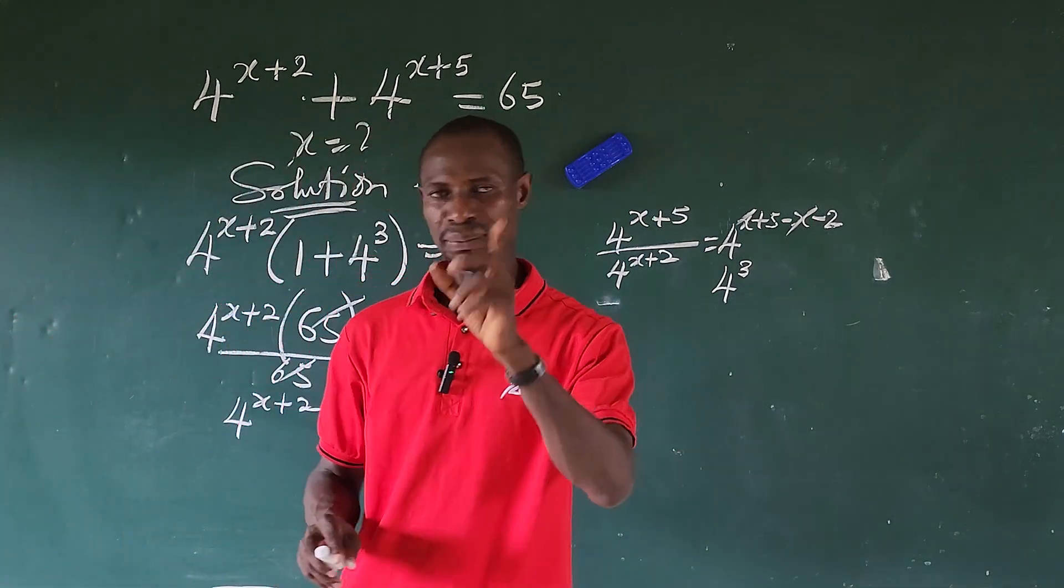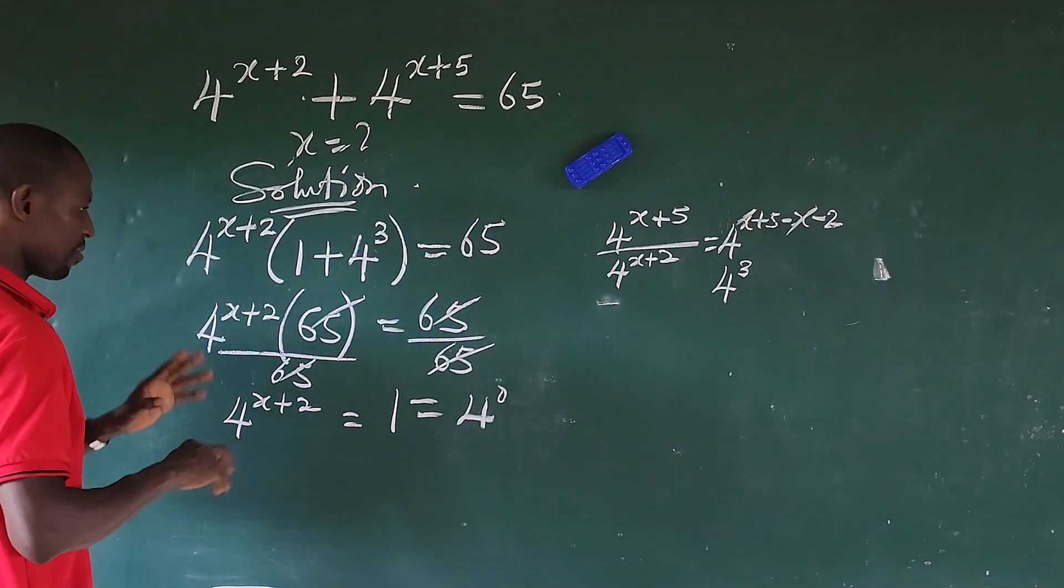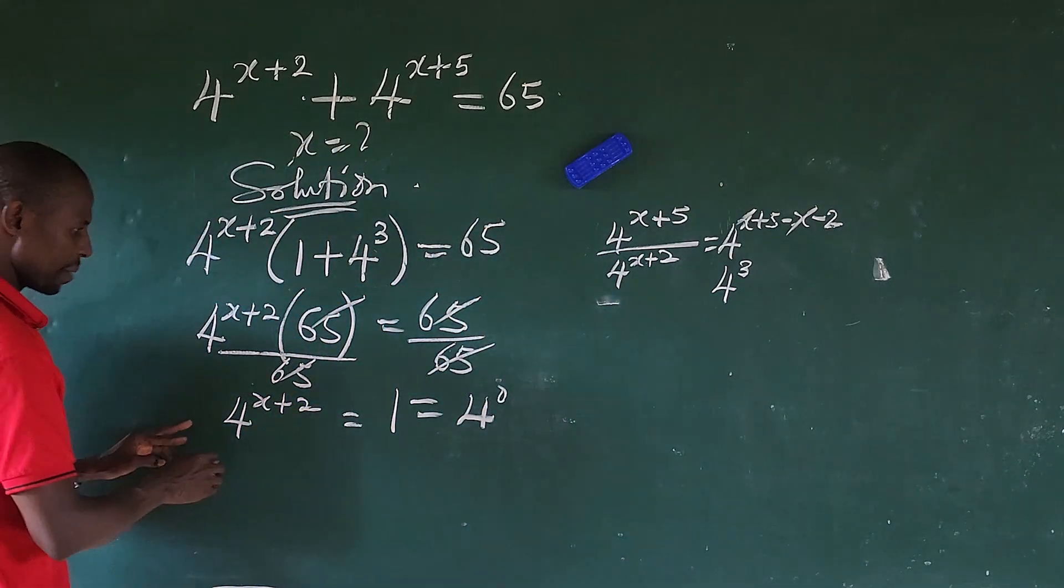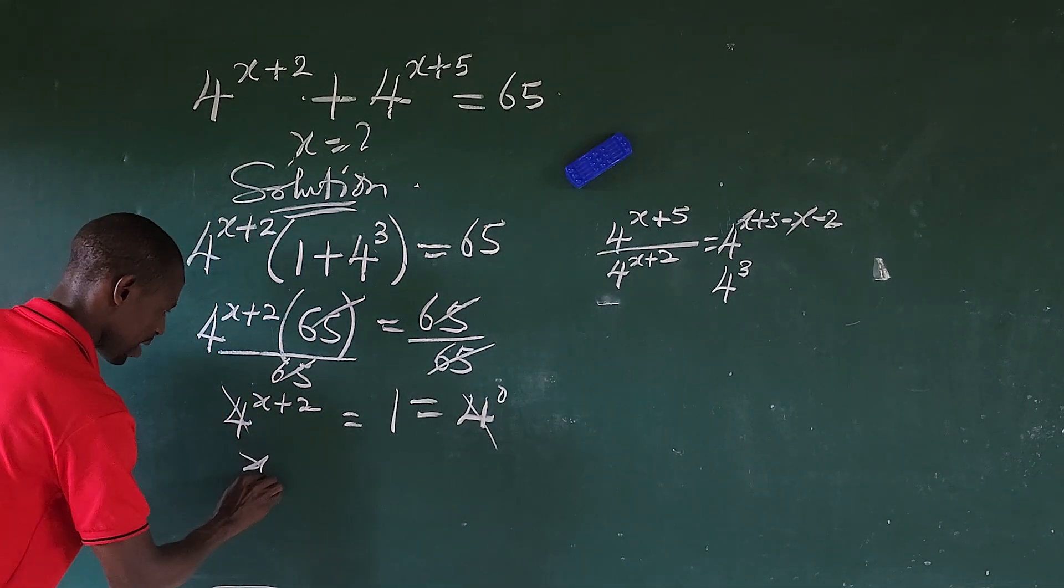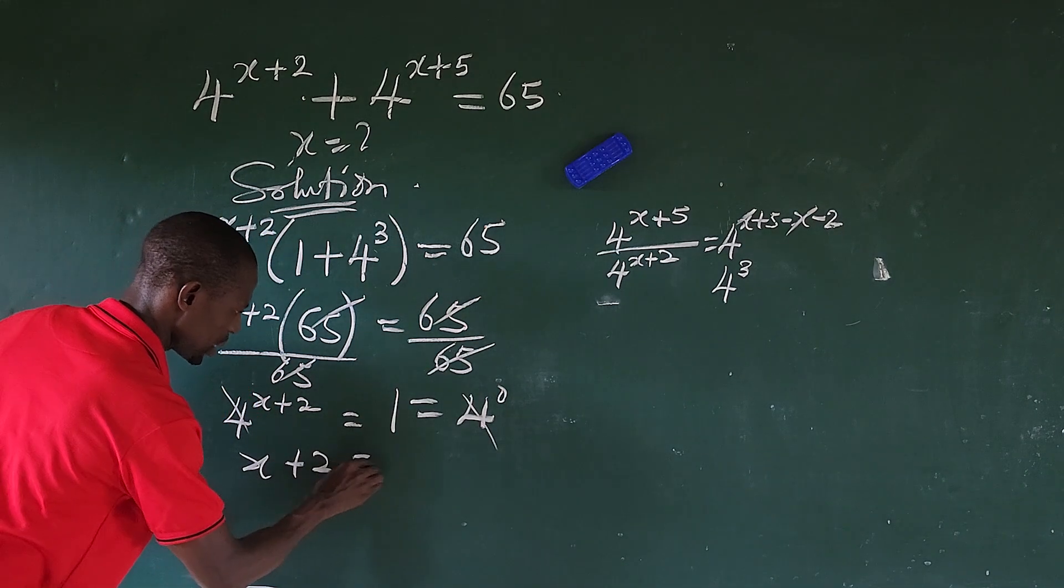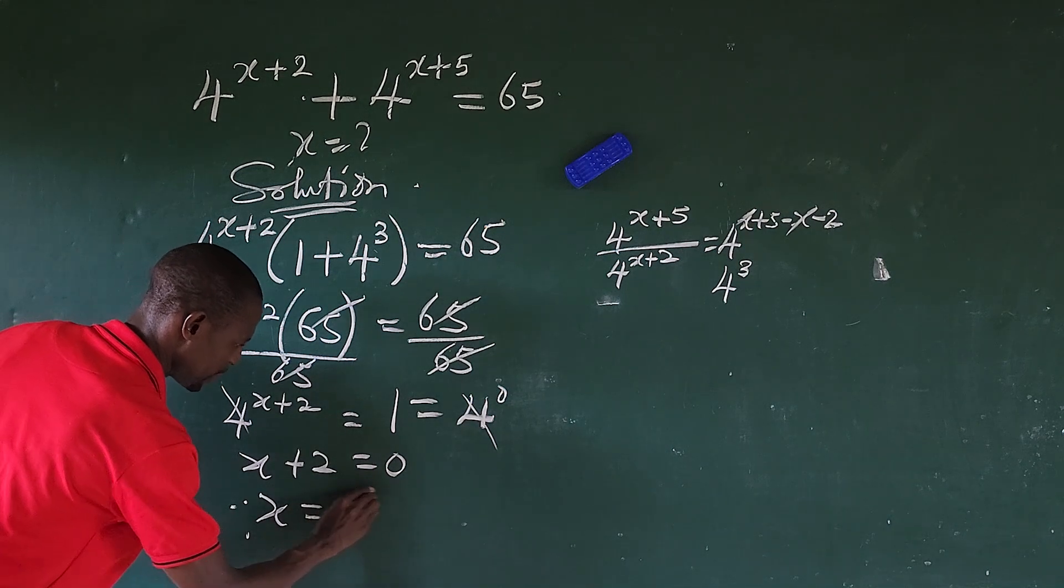Any number raised to the power of 0 is 1, except 0, because 0 to the power of 0 is undefined. So from here, the bases are the same, so now we have x plus 2 is equal to 0. X, therefore, is equal to minus 2.